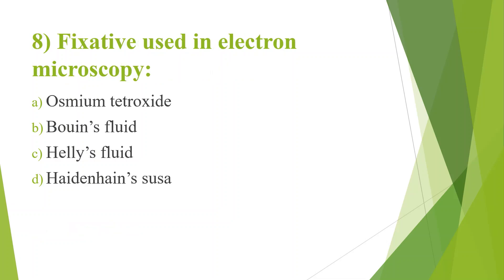Eighth question: Fixative used in electron microscopy. Option A, Osmium tetroxide; Option B, Bouin's fluid; Option C, Hellis fluid; Option D, Heidenhain-Susa. Answer is Option A, Osmium tetroxide. Bouin's fluid is a picric acid-containing fixative. Hellis fluid and Heidenhain-Susa are mercury chloride-containing fixatives.